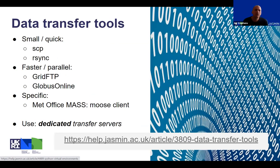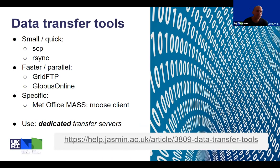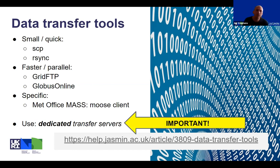Many of you are involved in data transfer. We have a help desk article which tells you about this. For quick, small transfers, you might look at traditional Linux tools like SCP and rsync. We also have access to more sophisticated tools such as GridFTP and Globus Online. If you're pulling data from the Met Office archive, you can pull it over the MOOSE client and there's information on how to do that. It's really important that you use dedicated transfer servers rather than using the scientific analysis servers for transfer work.